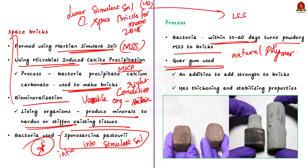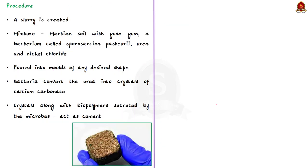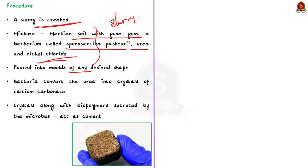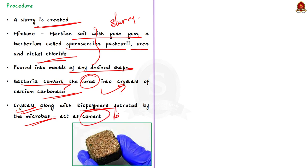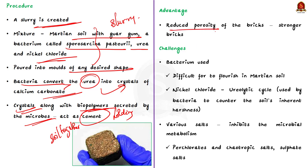The Gorgon gum has thickening and stabilizing properties useful in food, feed and industrial applications. A slurry is first created by mixing Martian soil with Gorgon gum, then Sporosarcina pasteurii, urea and nickel chloride are added. The slurry can be poured into molds of any desired shape. Over a few days, the bacteria convert urea into crystals of calcium carbonate. These crystals along with biopolymers secreted by the microbes act as cement holding the soil particles together. An advantage of this method is the reduced porosity of the bricks, as the bacteria seep deep into the pore spaces using their own proteins to bind the particles together, leading to stronger bricks.